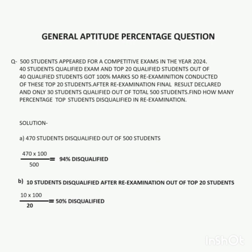40 students qualified out of 500 students, and 20 top students out of 40 got 100% marks. A re-examination was done of these 20 students, and after the examination, only 10 students passed. Find how many percentage of students disqualified in the final results.